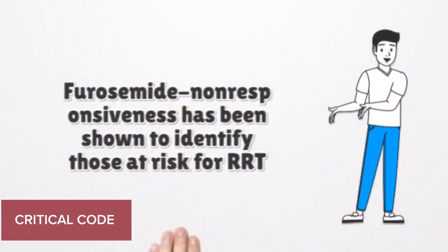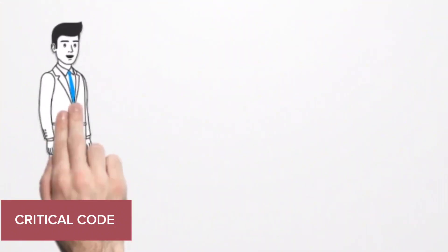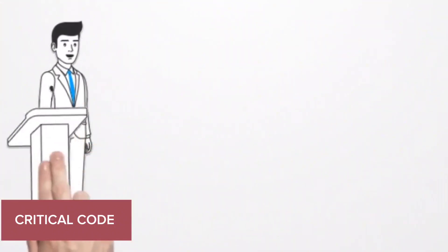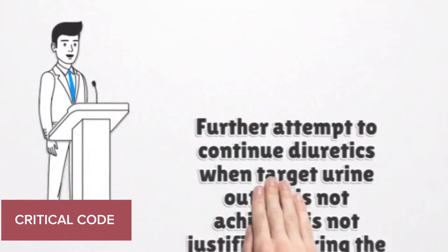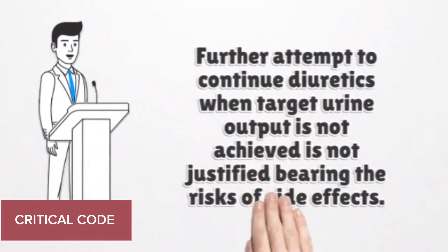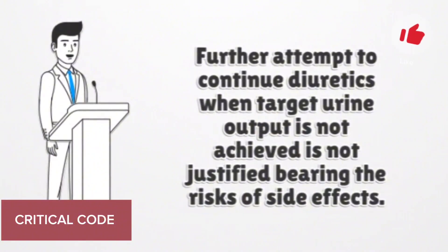Furosemide non-responsiveness has been shown to identify those at risk for renal replacement therapy. Further attempts to continue diuretics when target urine output is not achieved is not justified, bearing the risks of side effects.